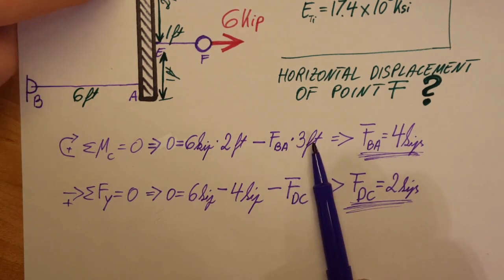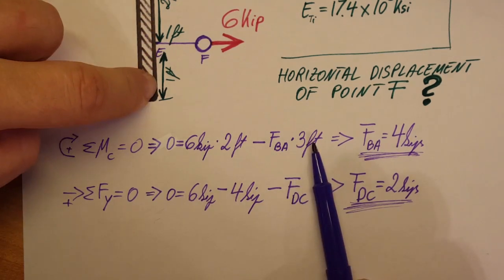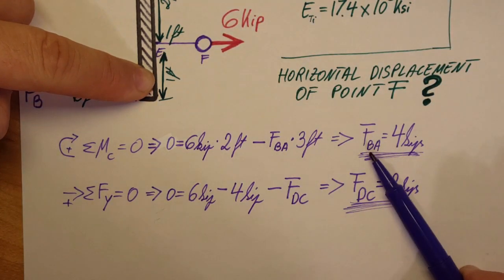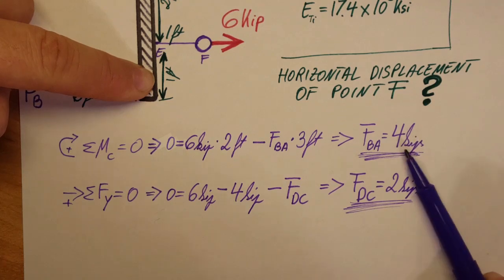We have a force of six kips at EF at a distance of two feet, minus the force BA times the distance which is at three feet. From here we find force BA which is four kips.